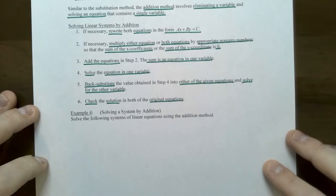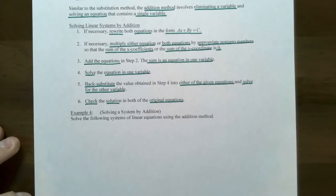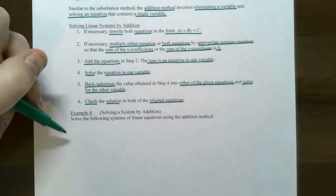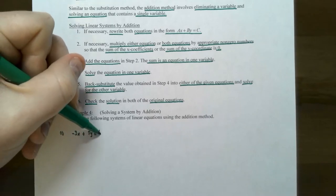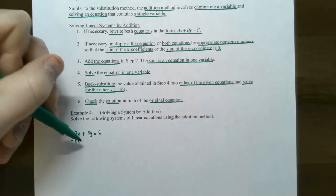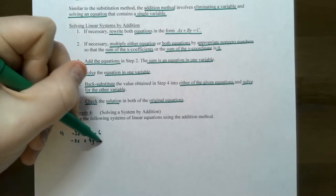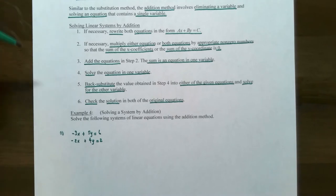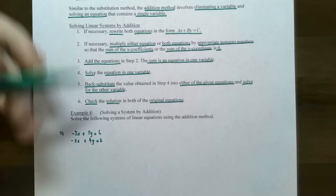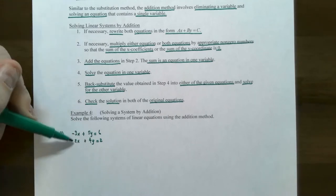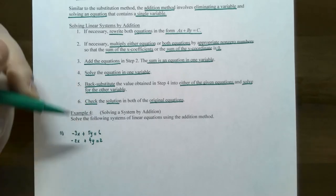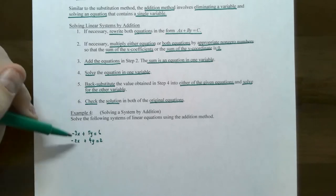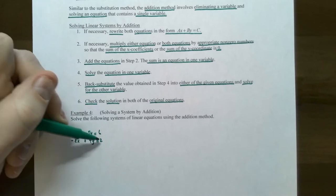Let's try out Example 4. We're going to solve the following systems of linear equations using the addition or elimination method. Number one: negative 3x plus 5y equals 6, and the second equation is negative 2x plus 4y equals 2. Notice that the substitution method would be difficult here because the coefficients are not one for x or y. So we are going to use the elimination method. The first step: make sure the equations are in general form — and they are, with all variables on one side and constants on the other.